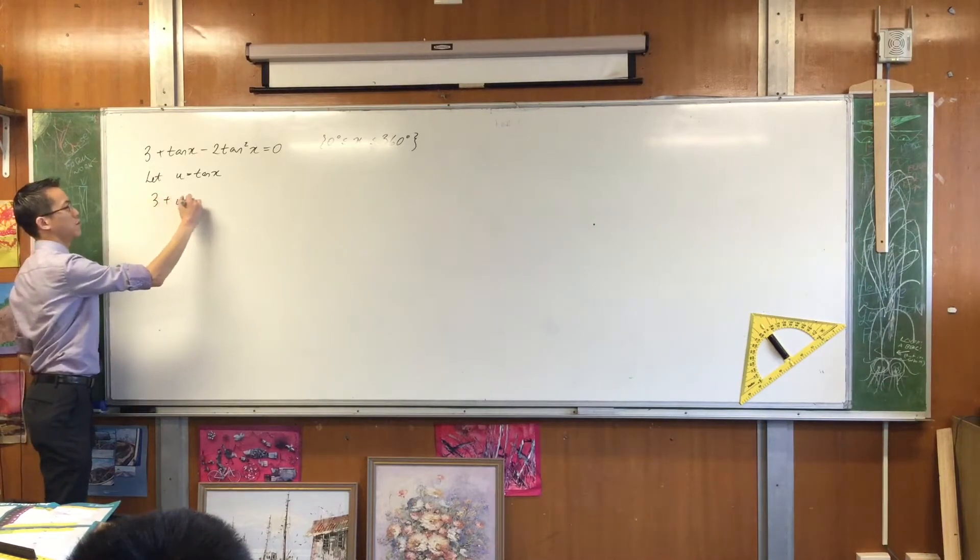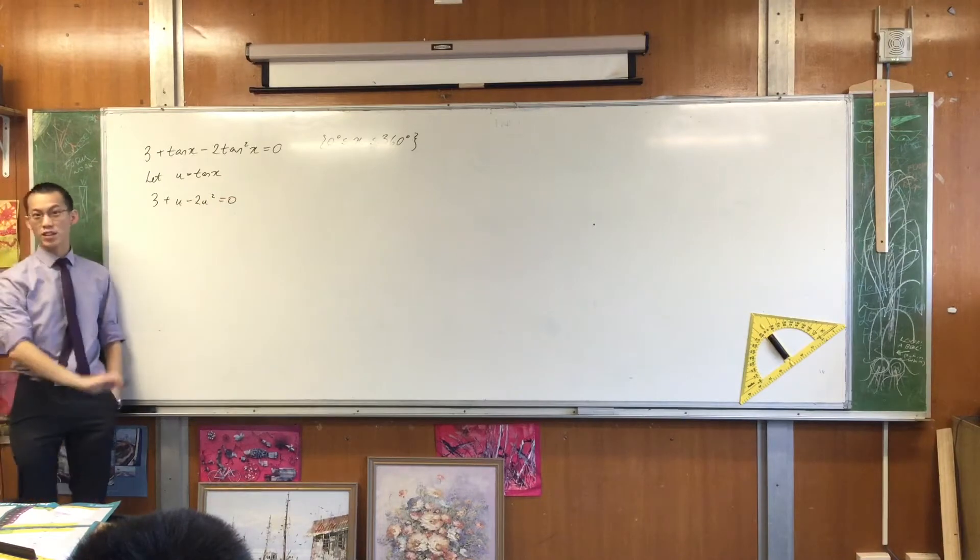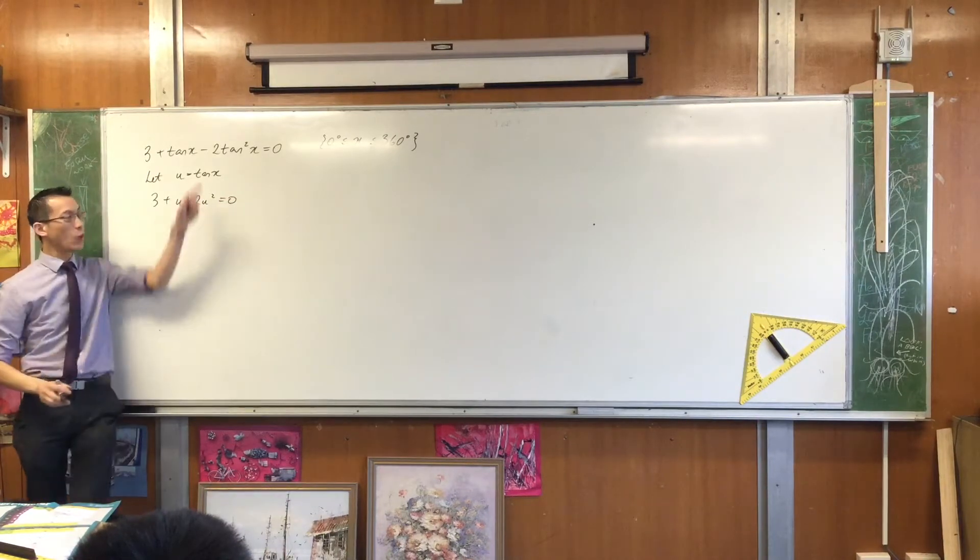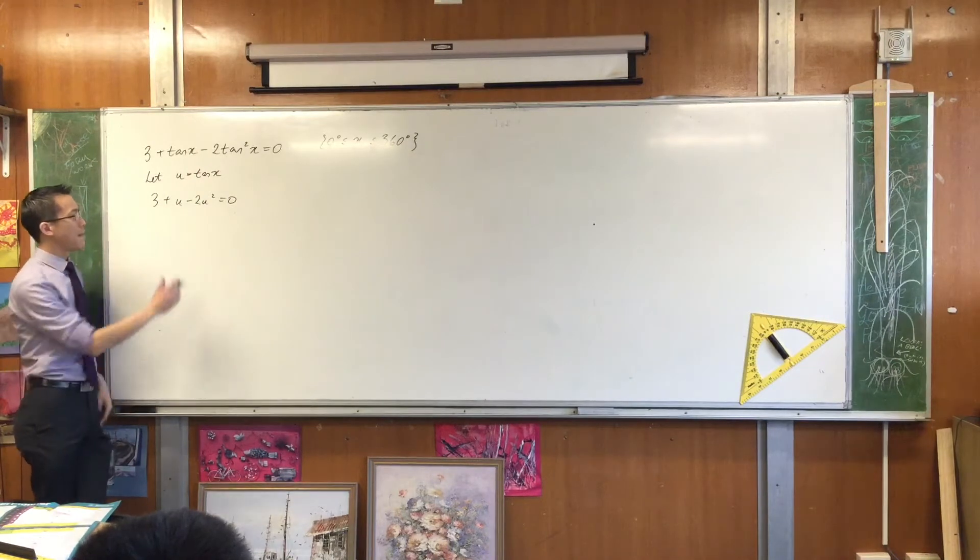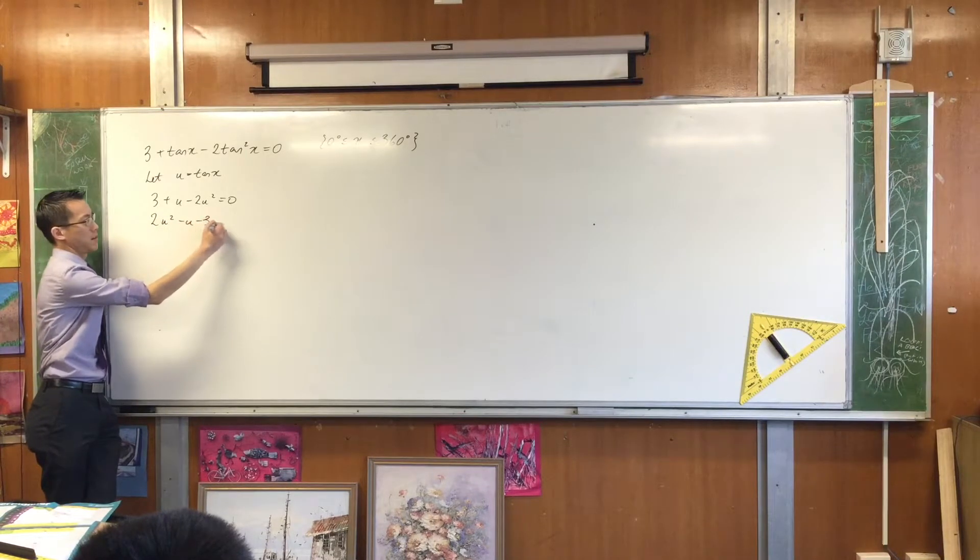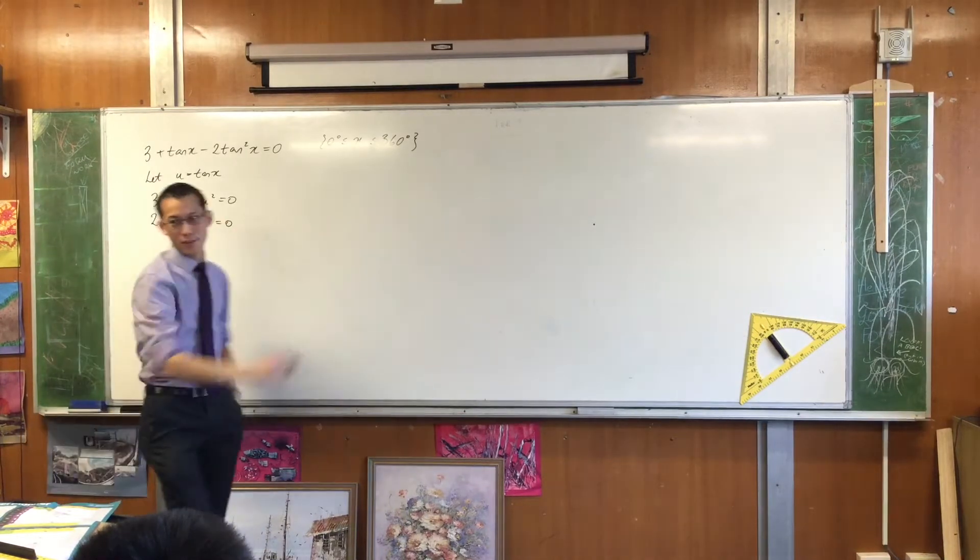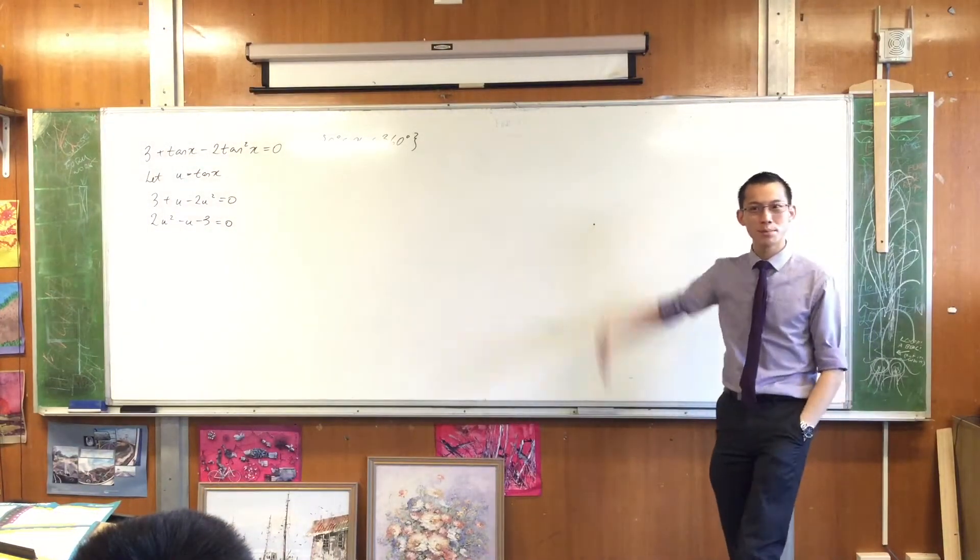So I've got 3 plus u minus 2u squared. So now it's clear as day. We've turned a weird looking question into a question I know how to do. This is just a quadratic. I may multiply by negative 1, because I don't like negative values for that first coefficient. What do I do with this? What can I do with it?